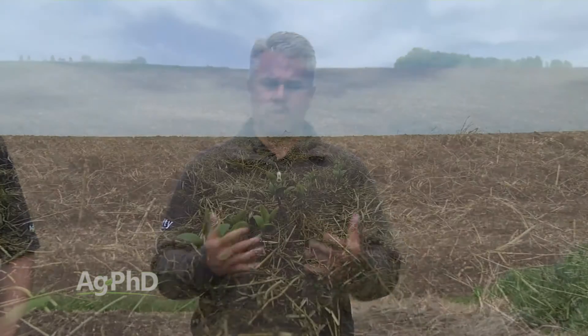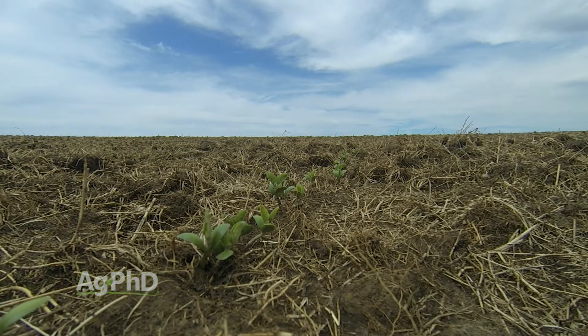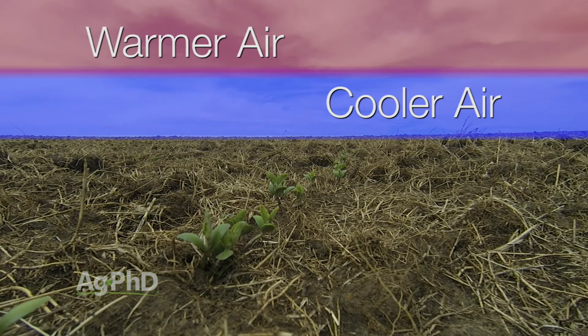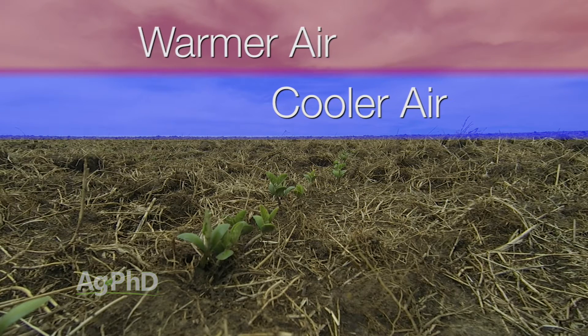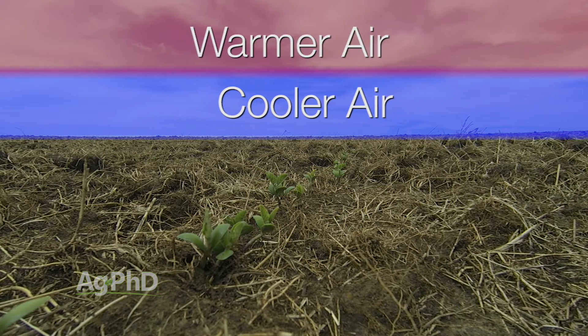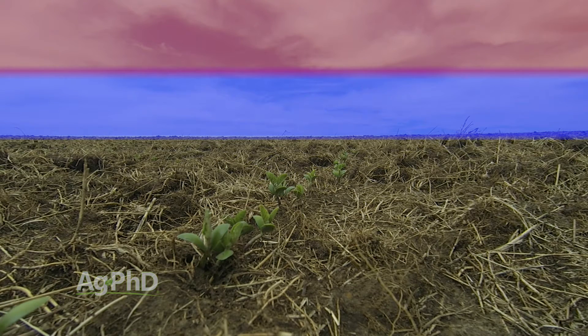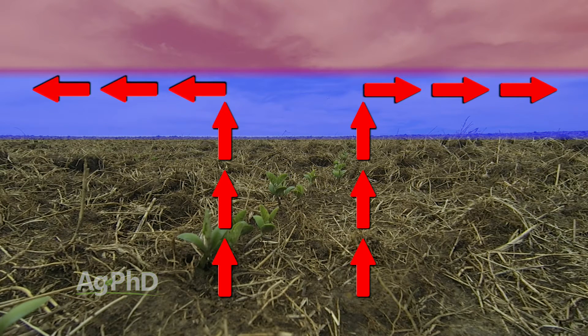With temperature inversions, this usually happens right away in the morning, for example. You'll see that we actually have warmer air above the ground-level air. That's a temperature inversion, and what can happen is nothing can move — whether it's spray drift or smoke or anything — it can't get above that level where the temperature is actually warmer. That causes real problems when you're out spraying something that may have volatilization, like 2,4-D for example.